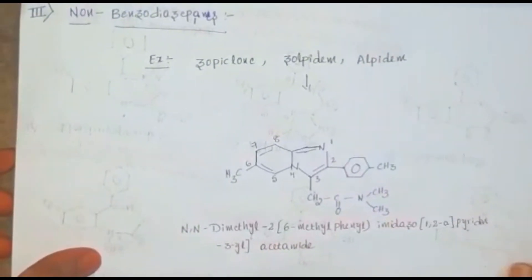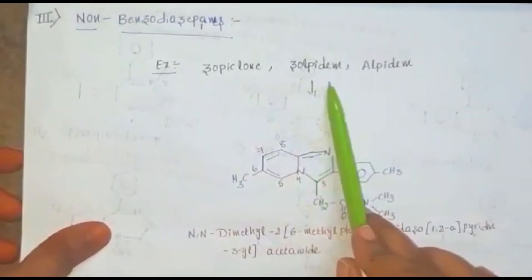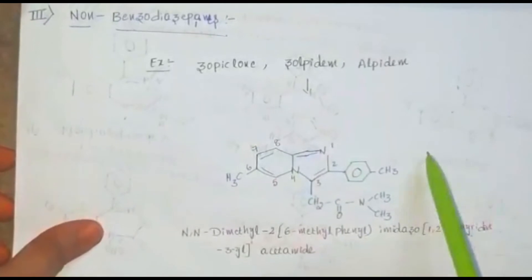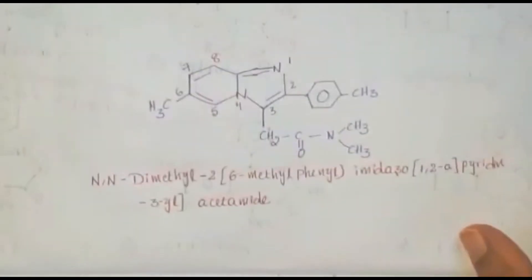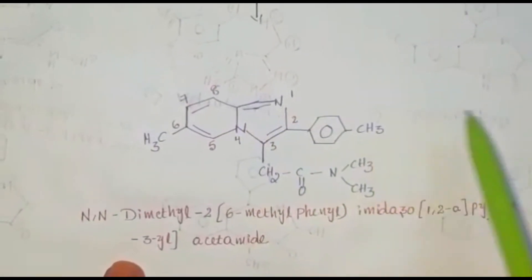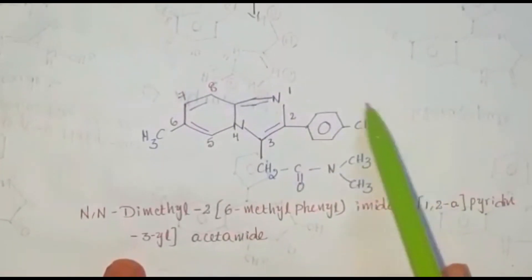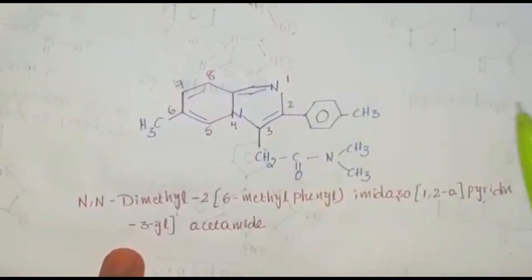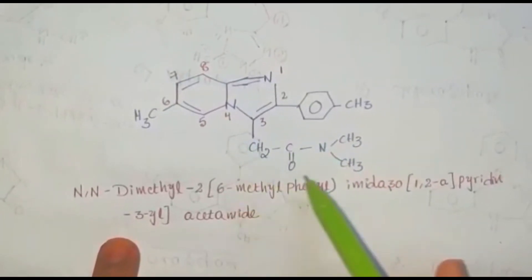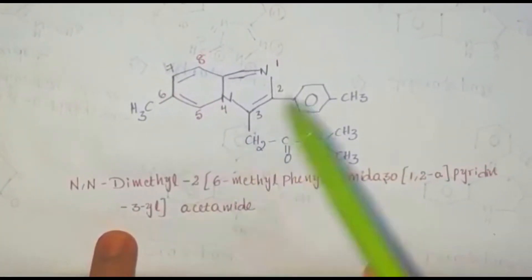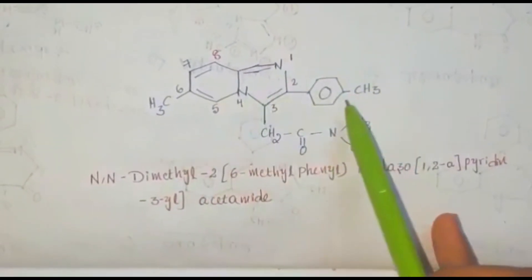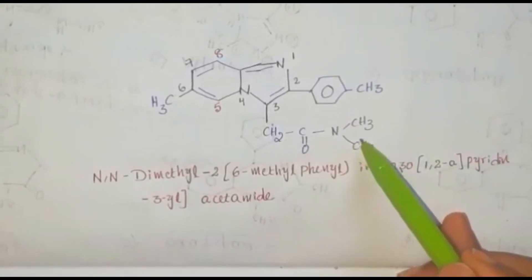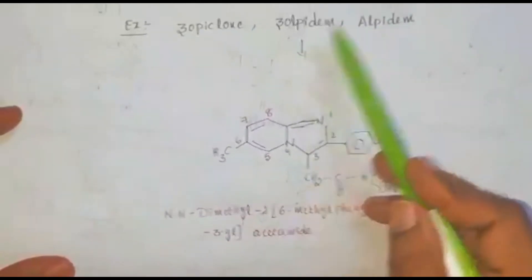Third category: non-benzodiazepines. Examples: zopiclone, zolpidem, and alpidem. The structure of zolpidem is numbered 1 through 8. It contains a methylbenzene ring at the second position and a dimethylacetamide group at the third position. It contains an imidazole moiety and a pyridine ring — so a pyridine ring, imidazole moiety, toluene ring, and dimethylacetamide group are all present in zolpidem.